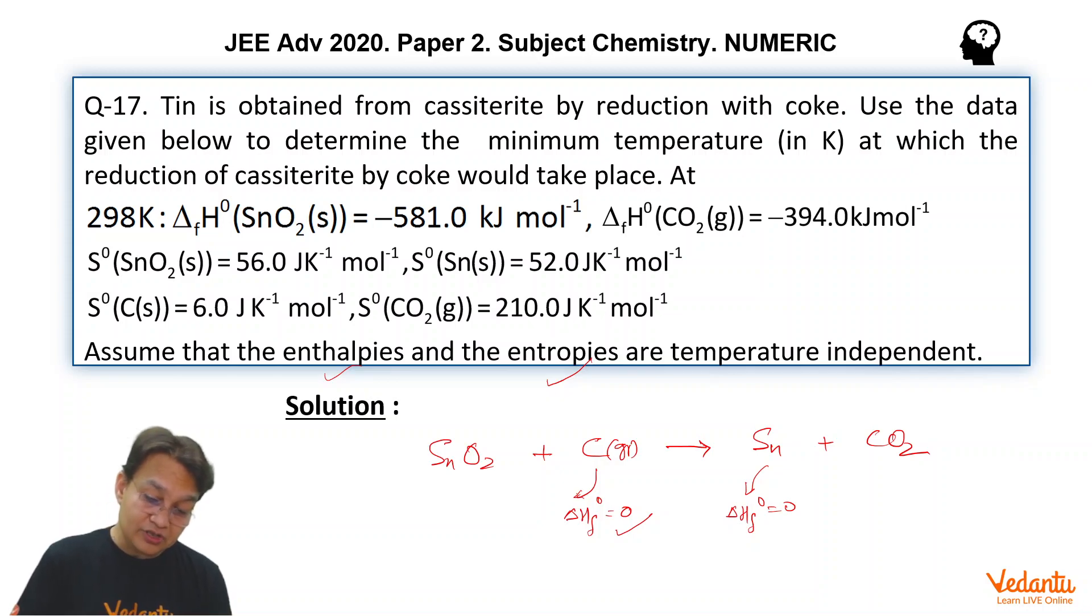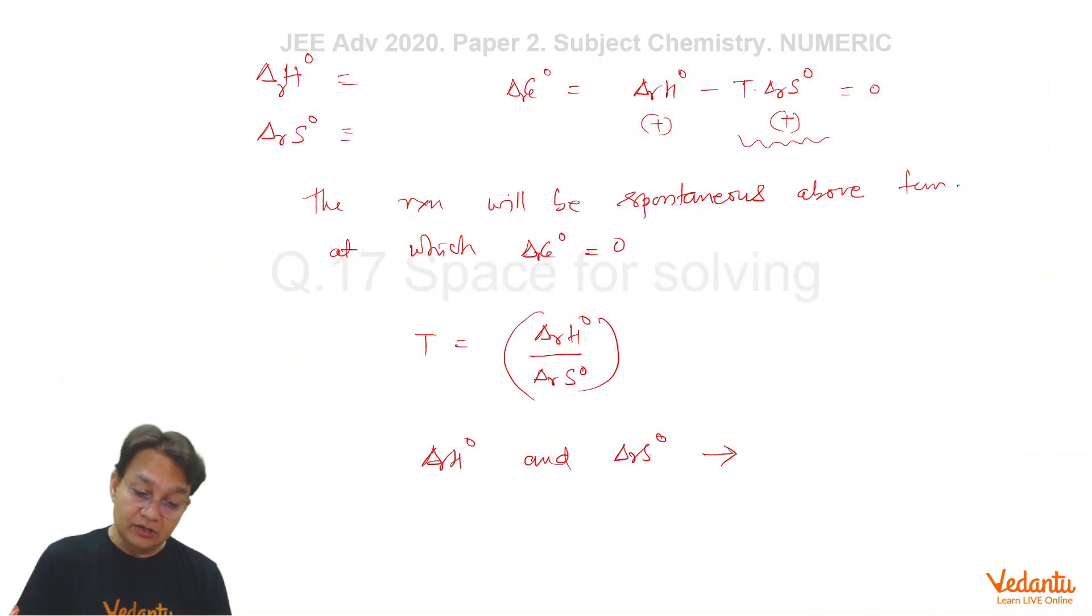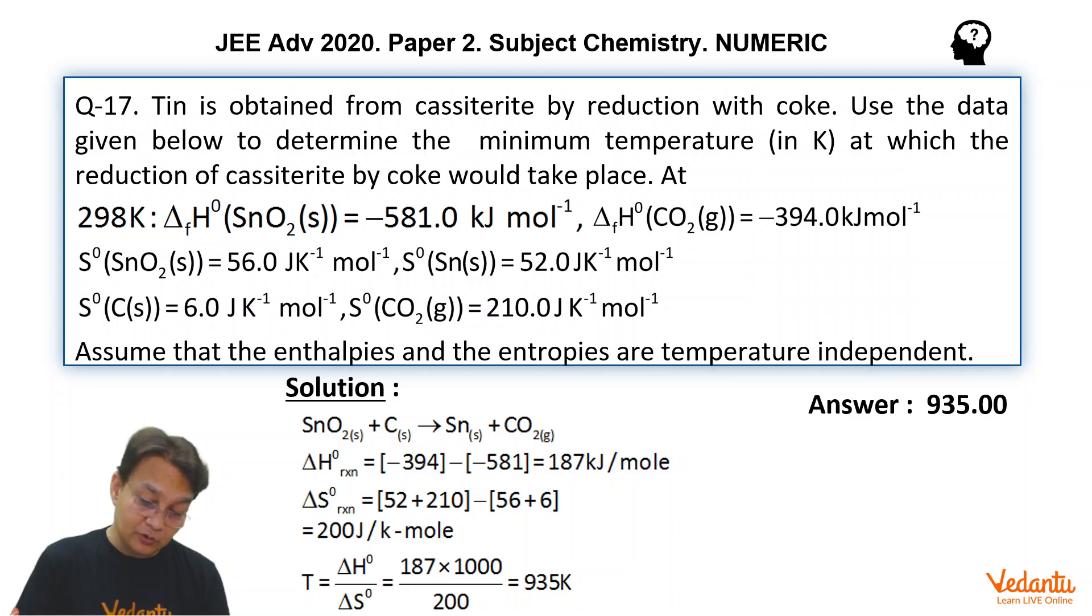By substituting these values now, I have already written the formula. You are going to get this value of delta RH0 which is 187 kJ per mole and delta S0 you will get by substituting the values of S0, which is 200 J per Kelvin per mole. From this you will calculate the temperature which is delta HF0 upon delta S0, that will come out to be 935 Kelvin. Above 935, if T is greater than 935, this reaction is going to be spontaneous.